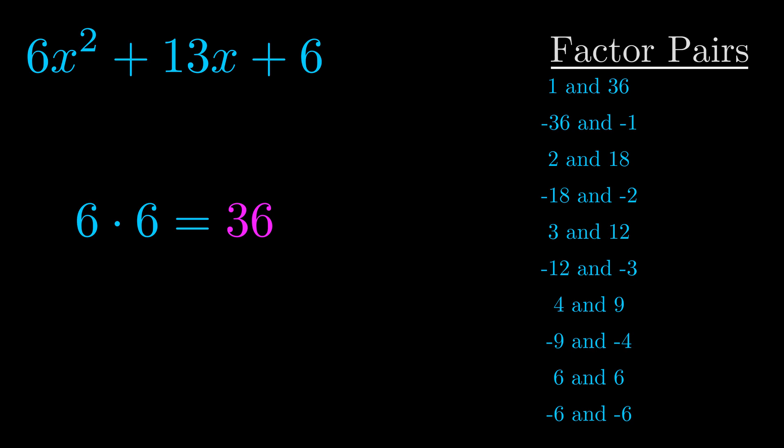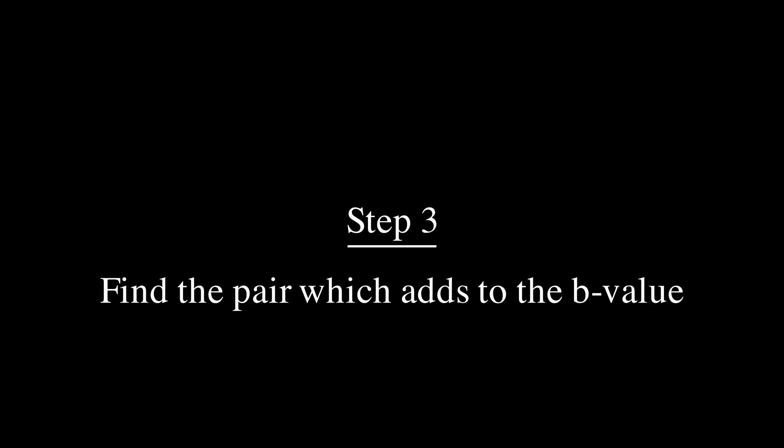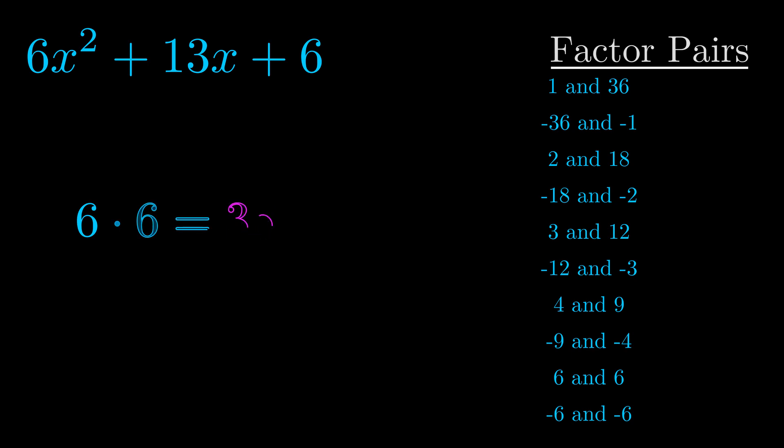Now once you have these factor pairs, the goal is to find which of these pairs adds to the b value. The b value is the coefficient on the x term. That's the middle term, the one that we haven't done anything with yet. And really this is the only factor pair that we need.